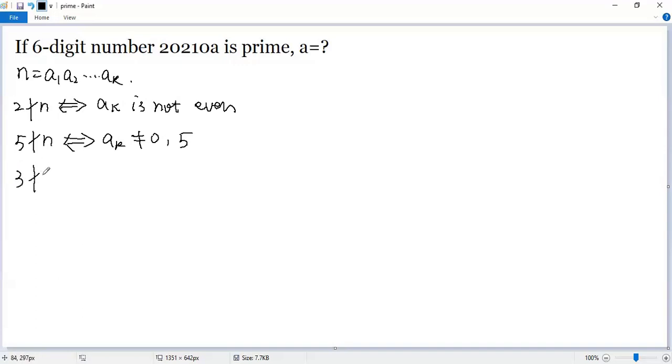3 is not a factor of N if and only if 3 is not a factor of the sum of the digits. That's A1 plus A2 plus up to AK.